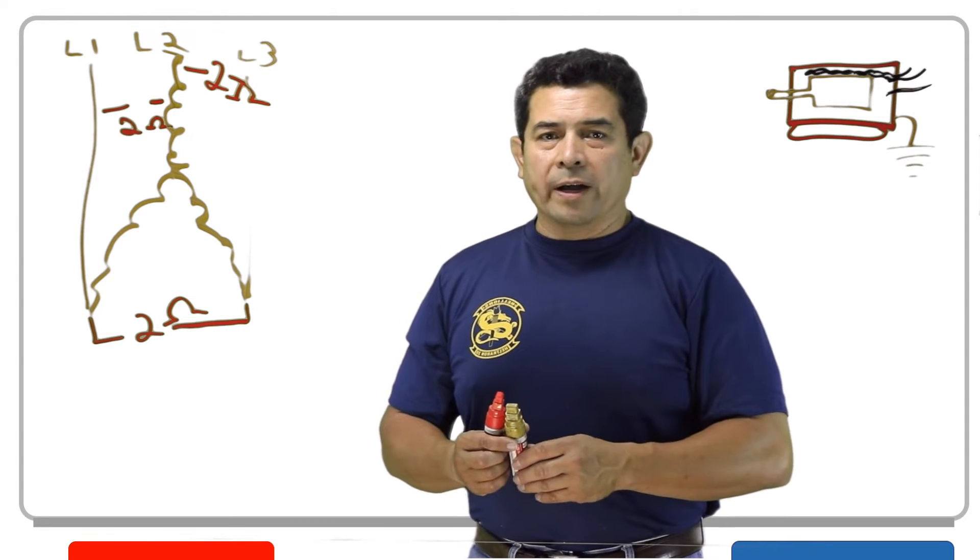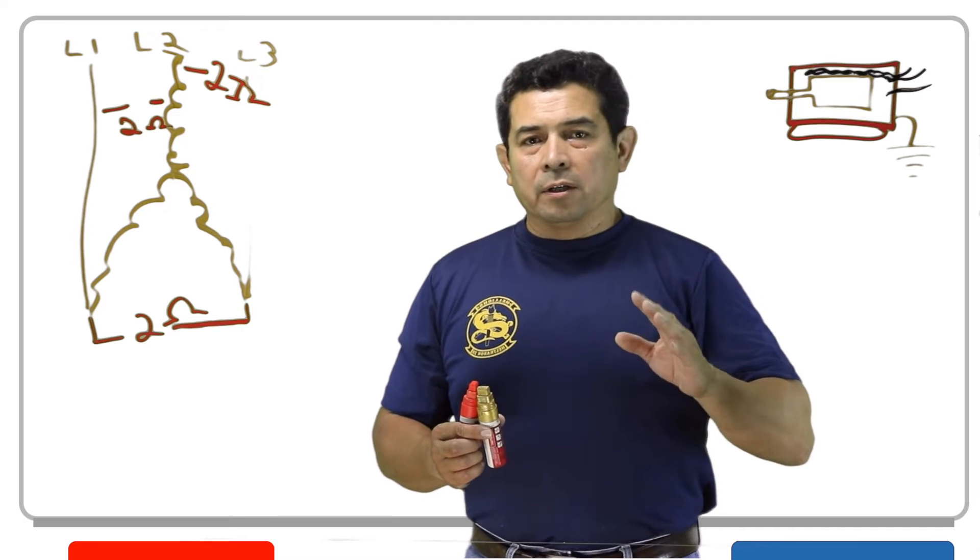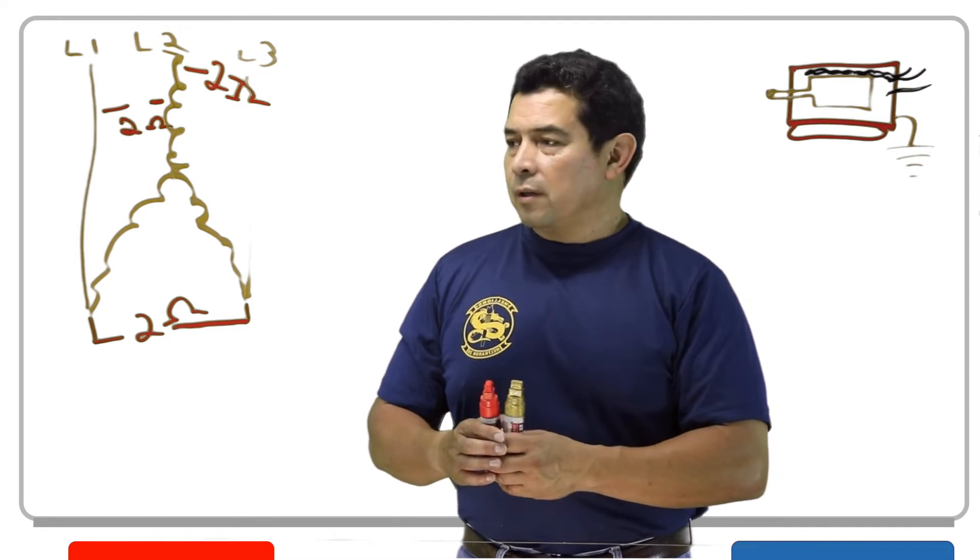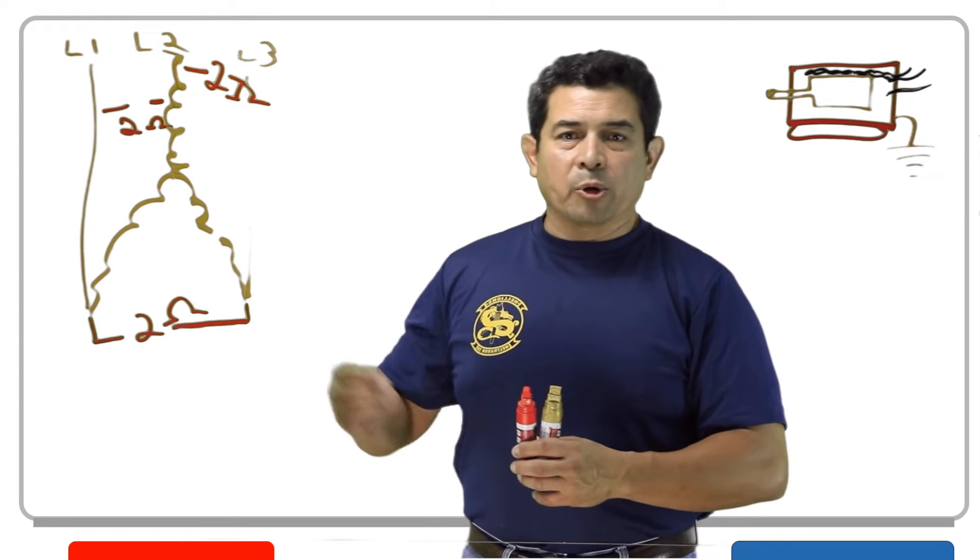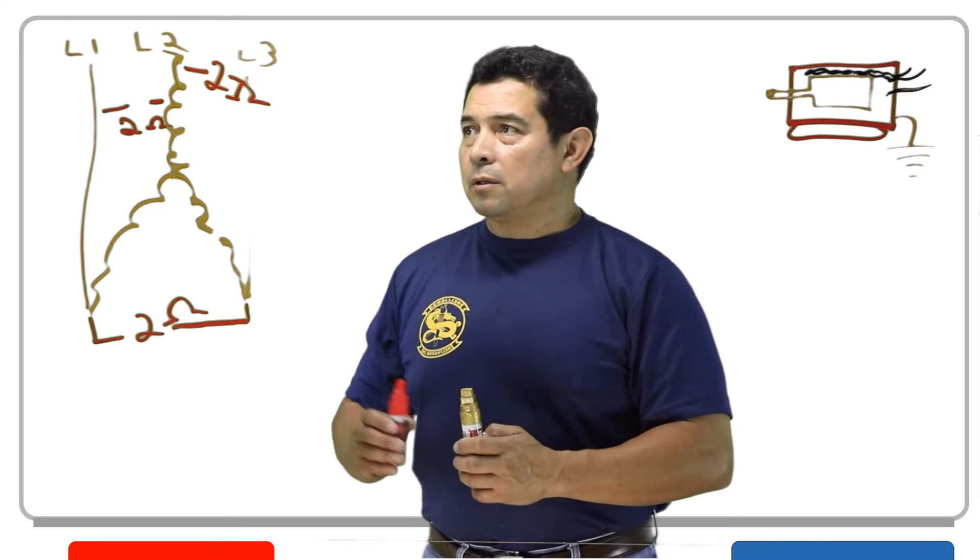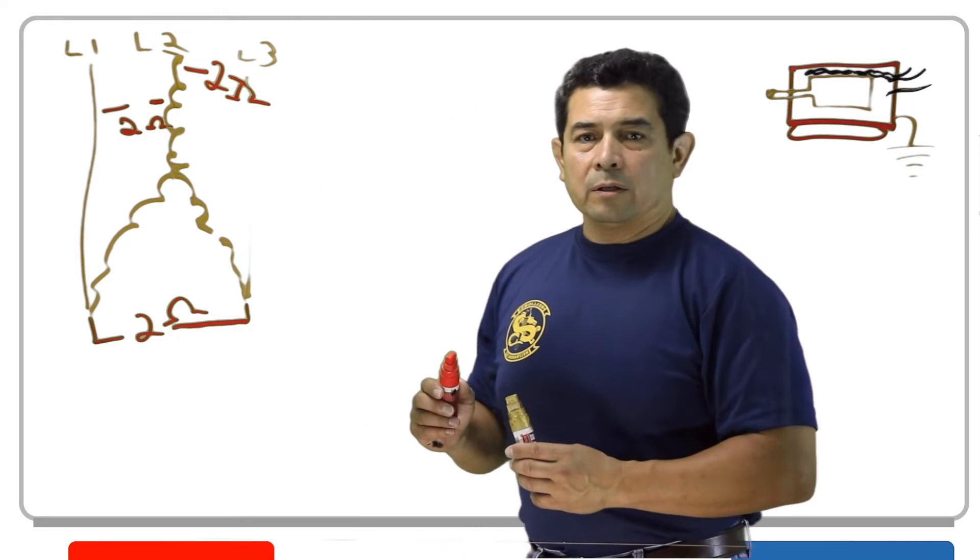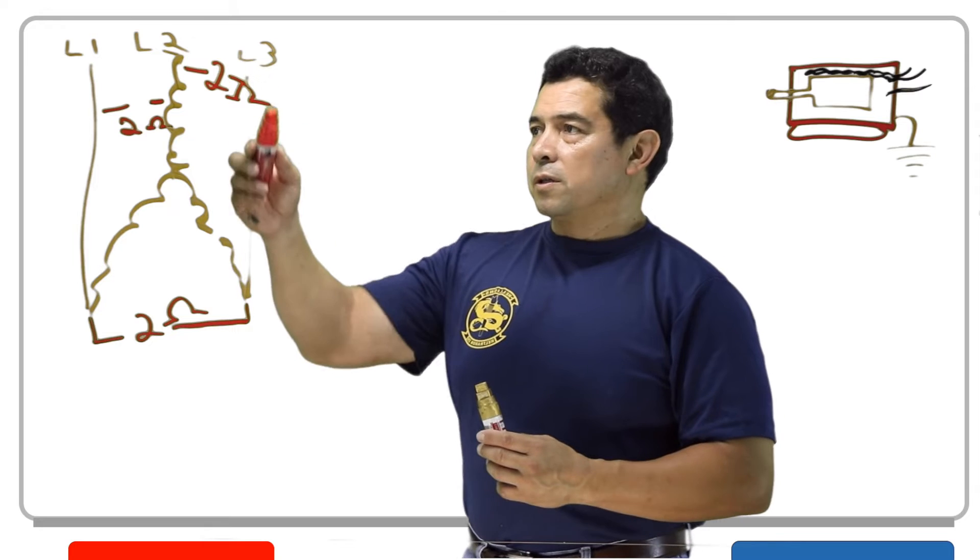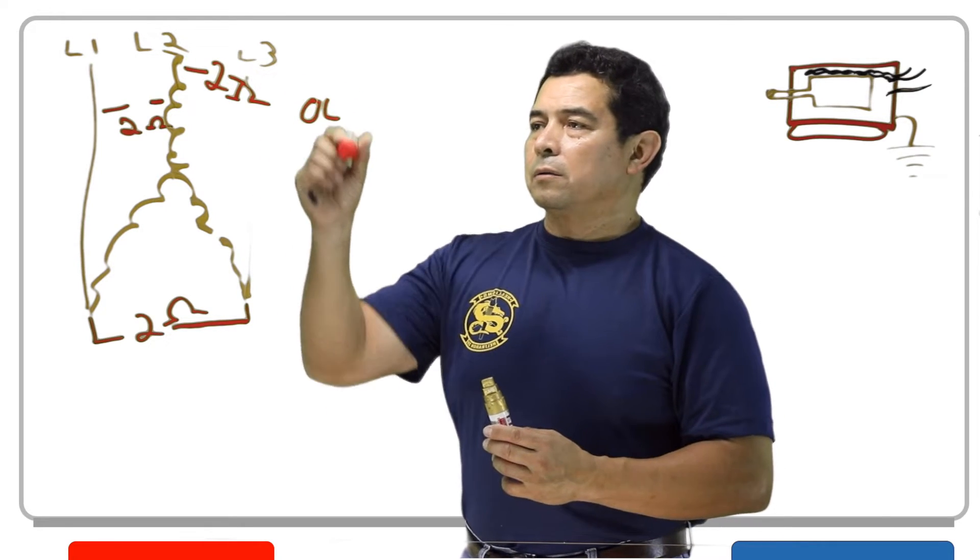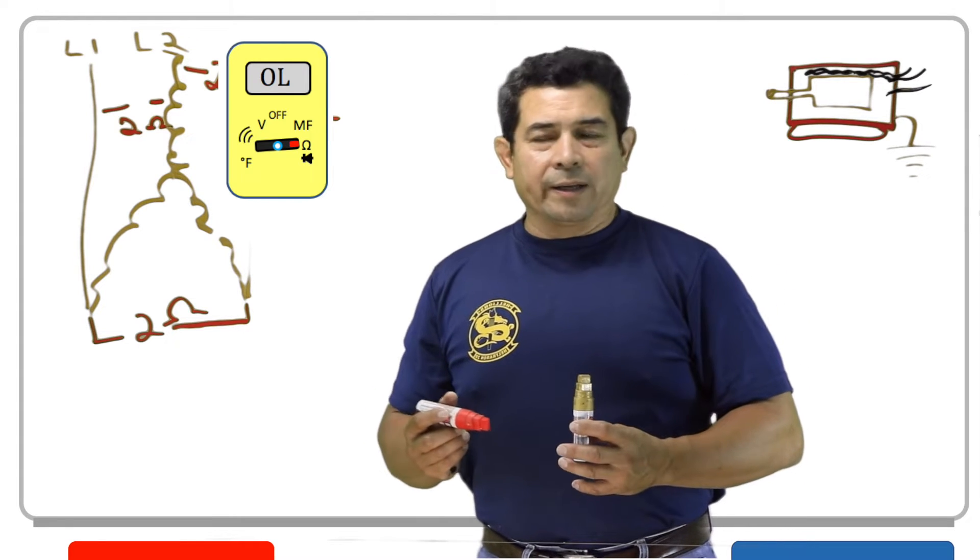Now I'm going to make a video where I explain what all of these are later on, but very basically, with an open, what happens is, it's a break in the lines. So now, if this line was broken, this would not be two ohms. This we would get what they call OL, or in other words, open line.